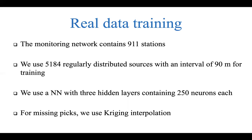We use a neural network with three hidden layers containing 250 neurons each. In real data, when predicting solutions from observed travel times, we may have missing picks. In our dataset, the best case has about 40 or 50 missing picks out of 911, and the worst case has about 500 missing picks. In all cases, we use Kriging interpolation, which in our observation performs very well to interpolate the missing travel times.